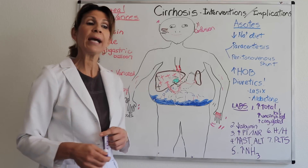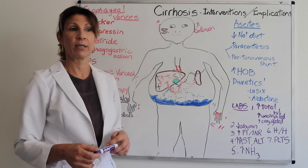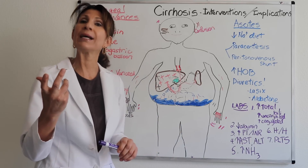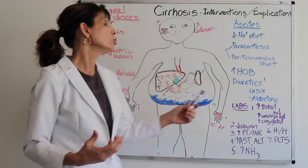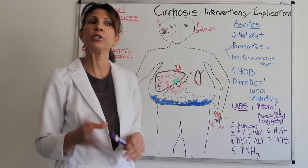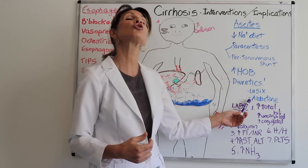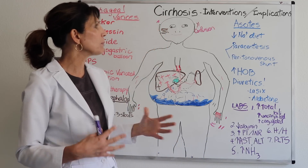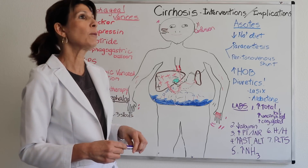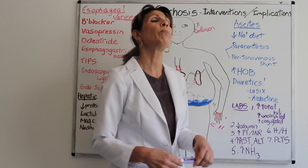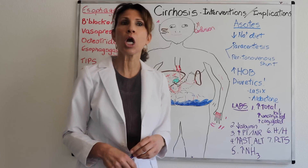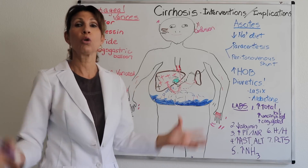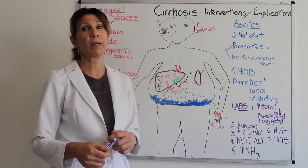Aldactone is an aldosterone antagonist diuretic, and it's a great choice for this patient because in liver failure you're unable to inactivate circulating hormones like aldosterone. An aldosterone antagonist addresses that directly. It's also more conservative in its diuretic effect than Lasix. Tracking labs is both an assessment and an intervention. Total bilirubin will be elevated — hyperbilirubinemia — and patients will display jaundice, dark urine, and clay-colored stools.